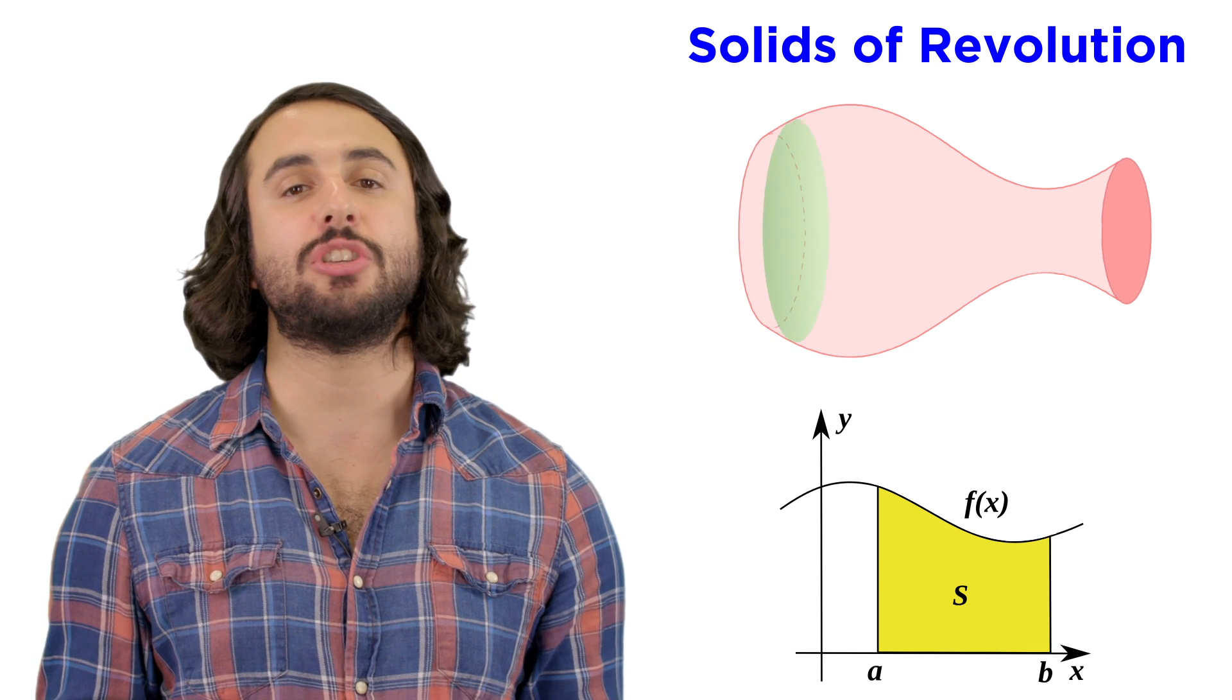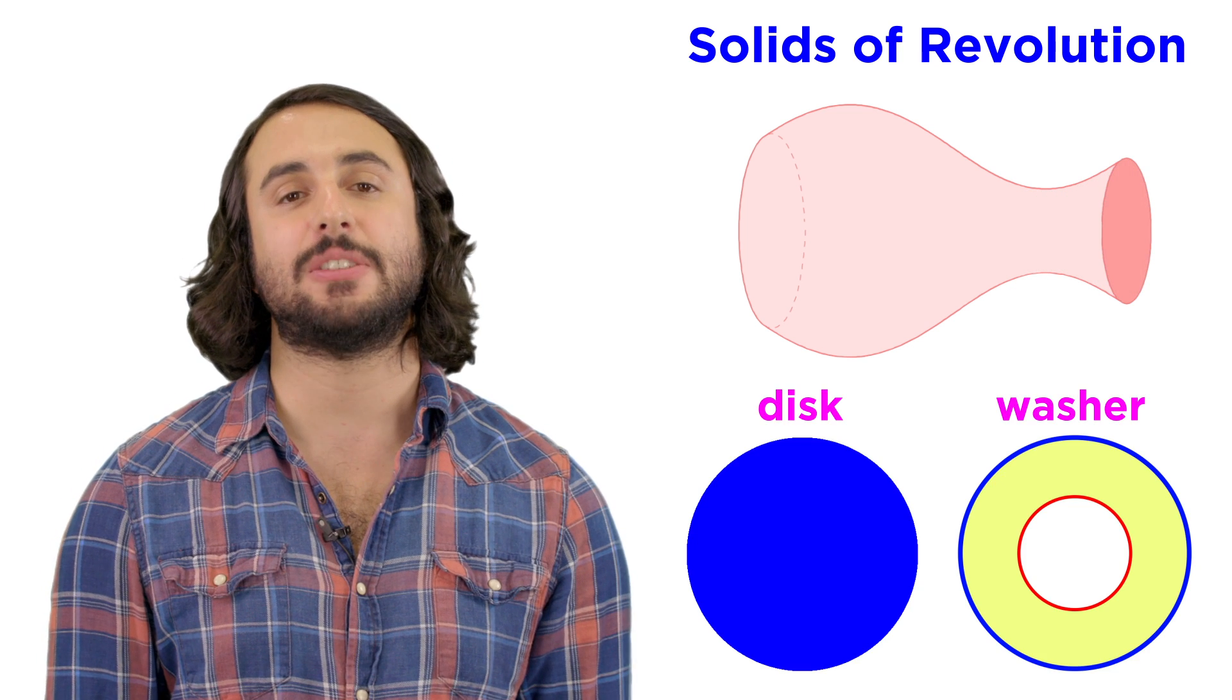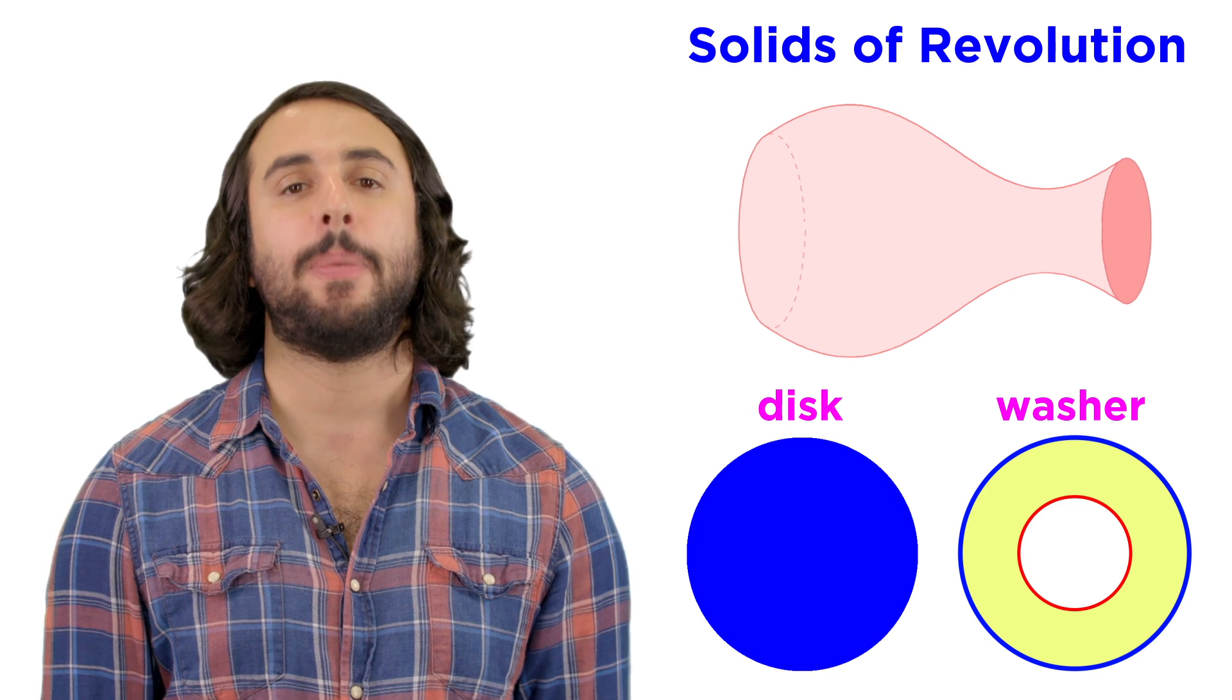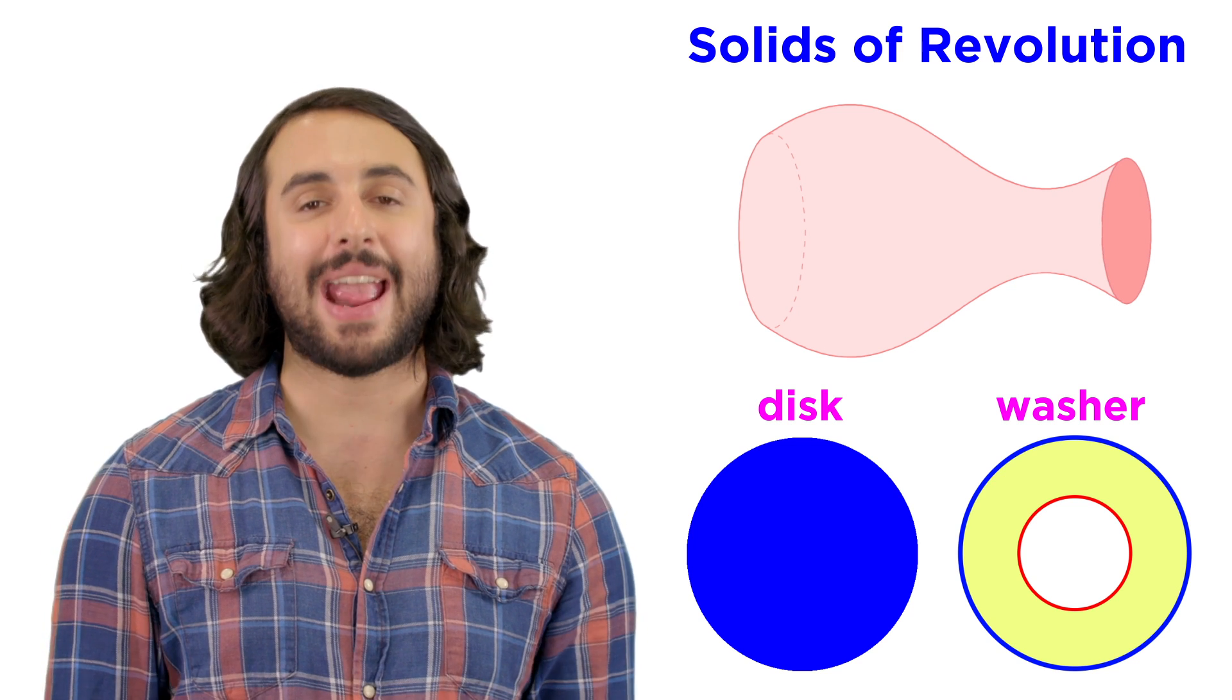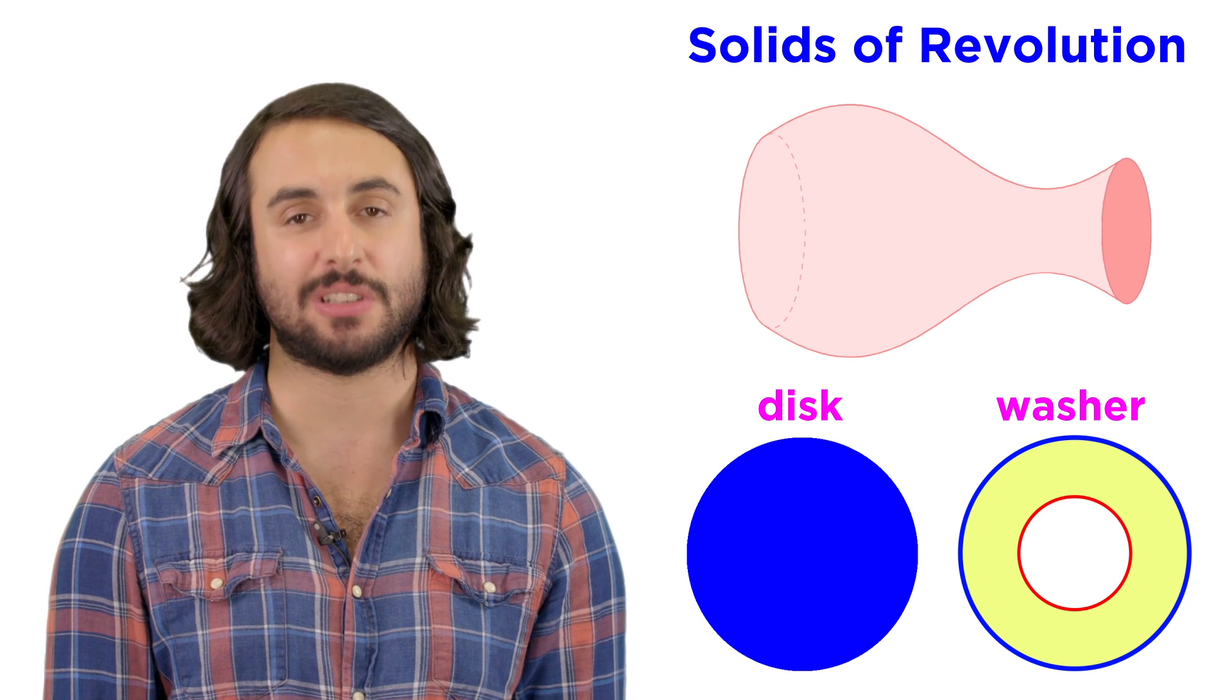To get volume, we just ran some area across a shape and added all of those up. Sometimes this was the area of a disk, sometimes the area of a washer, but whatever the situation, we were able to calculate the area of a cross section rather easily given the functions involved.